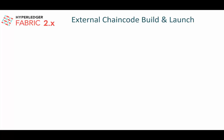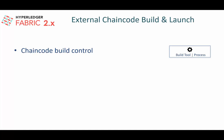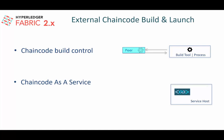Fabric 2.x supports the externalization of the chaincode build and chaincode launch. In 1.x, the chaincode build process was carried out by the peer by launching a build container. That process still works in 2.x, but in addition to the container-based build mechanism, the peer also supports an external build interface. You can put together your build process in an independent component and configure the peer to use it to build the chaincode. From the launch perspective, the chaincode can be launched as a service in any kind of container — for example, as a process or in a Kubernetes pod — as long as the interface exposed by the chaincode can be configured in the peer.